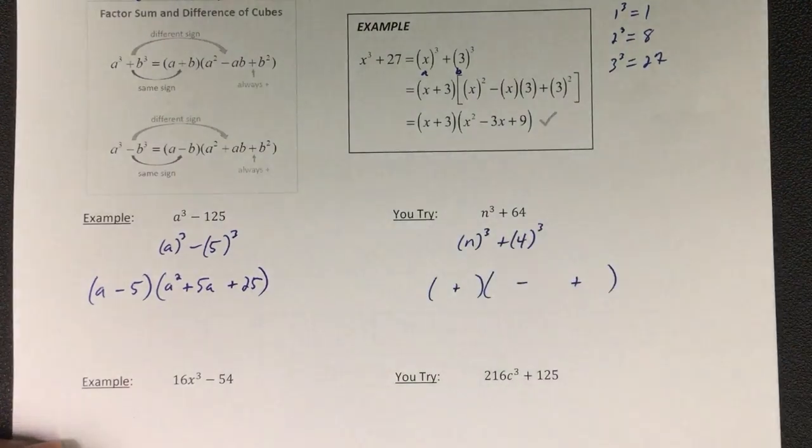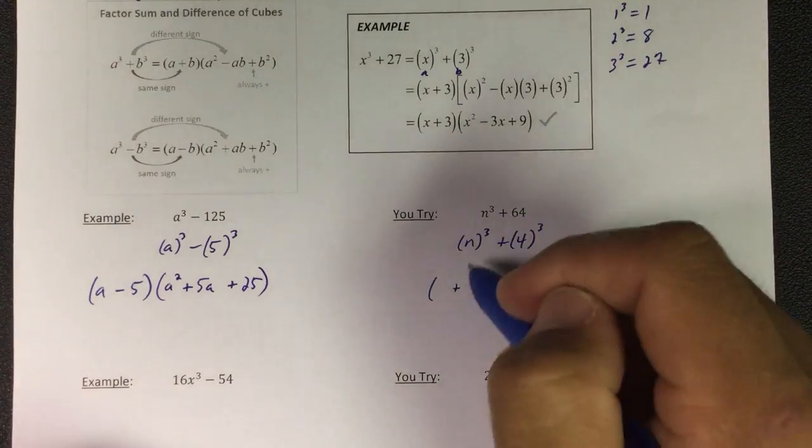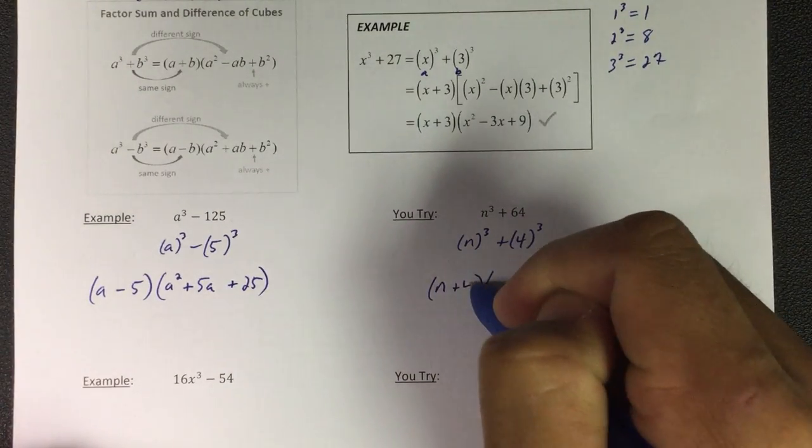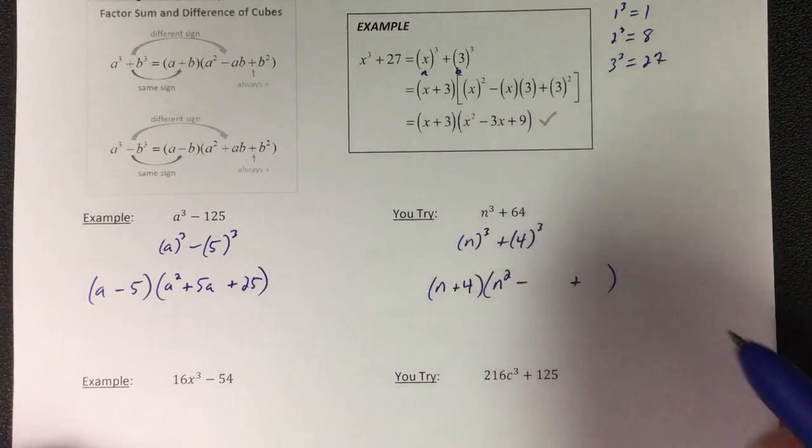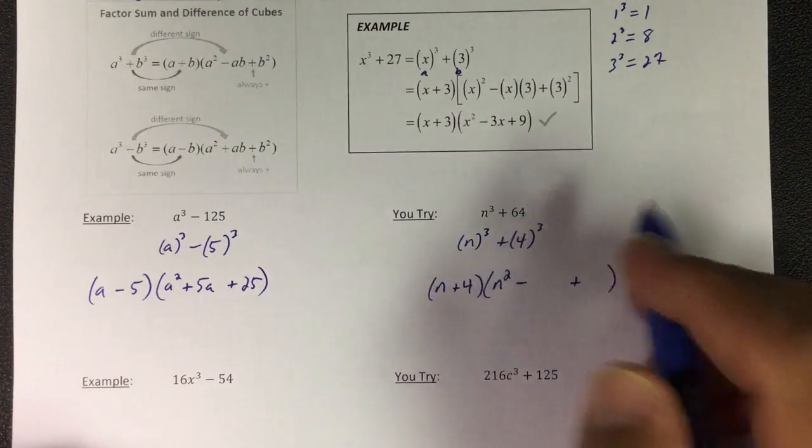Then you got the first one squared, then the first one times the second one, so 4n, and then the last one squared.